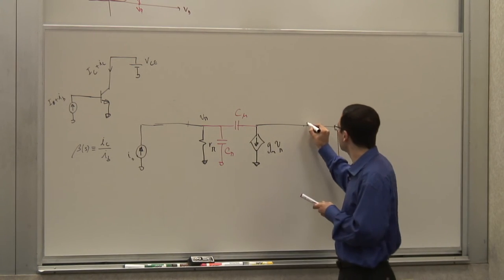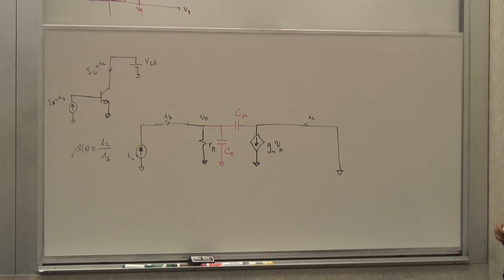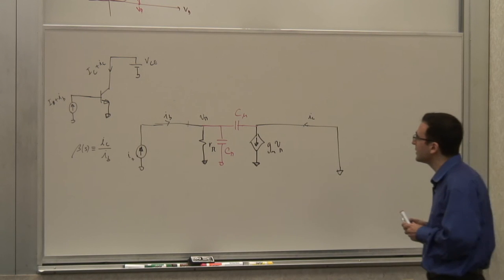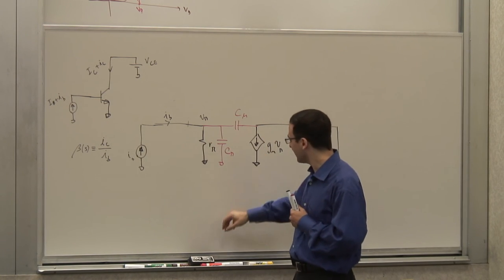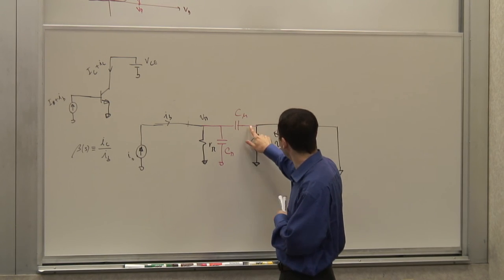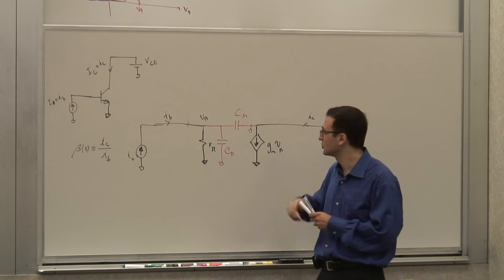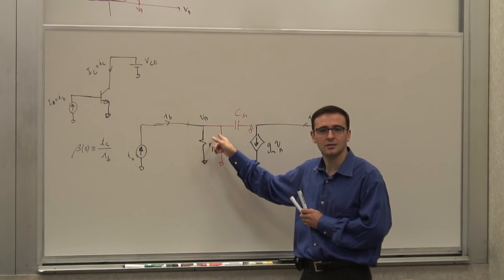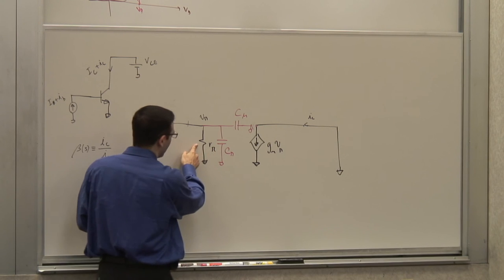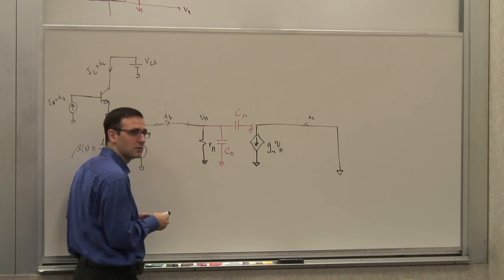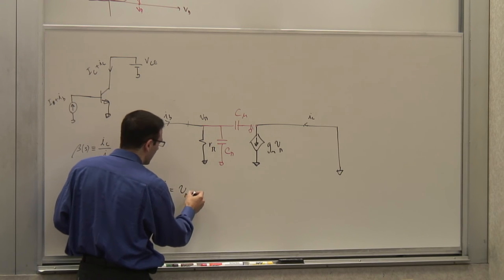What I'm trying to calculate is ic in terms of ib as a function of frequency. The intermediate variable is Vpi, because Vpi determines ic = gm Vpi. Can I redraw the circuit so that Cpi and Cmu are both connected between the base and ground (since the emitter is ground)? Yes, these two are really in parallel. So I have a parallel combination of Rpi and Cpi + Cmu.